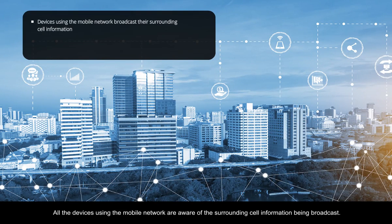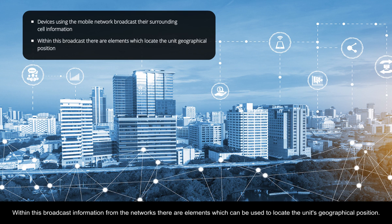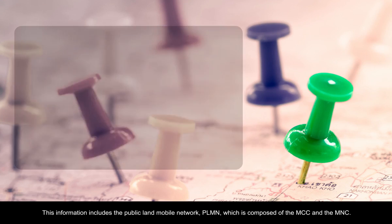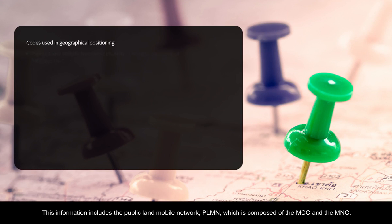All the devices using the mobile network are aware of the surrounding cell information being broadcast. Within this broadcast information from the networks, there are elements which can be used to locate the unit's geographical position. This information includes the public land mobile network, PLMN, which is composed of the MCC and the MNC.